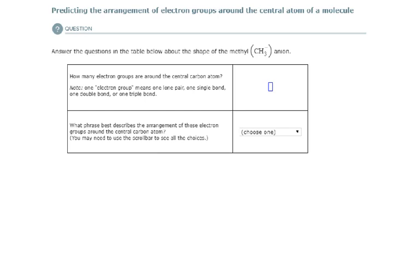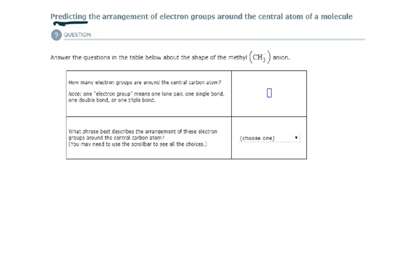Electron domain and molecular geometry are verified experimentally with very technical procedures and very expensive equipment, but it can be predicted, which is what we're doing with Lewis structures. We are going to predict the arrangement of electron groups, and that is called electron domain geometry.